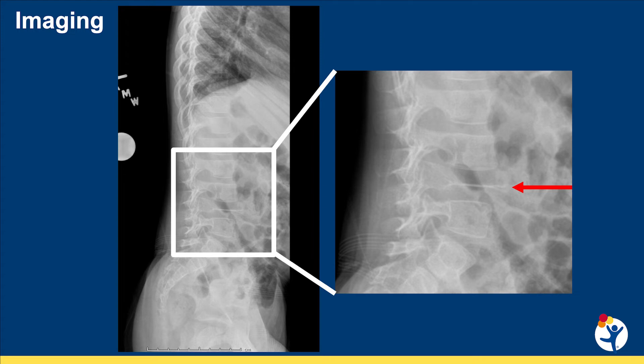When CRMO occurs in the spine, patients can get compression fractures. What you've seen here is what we call vertebra plana, when the vertebral body is completely flattened out.